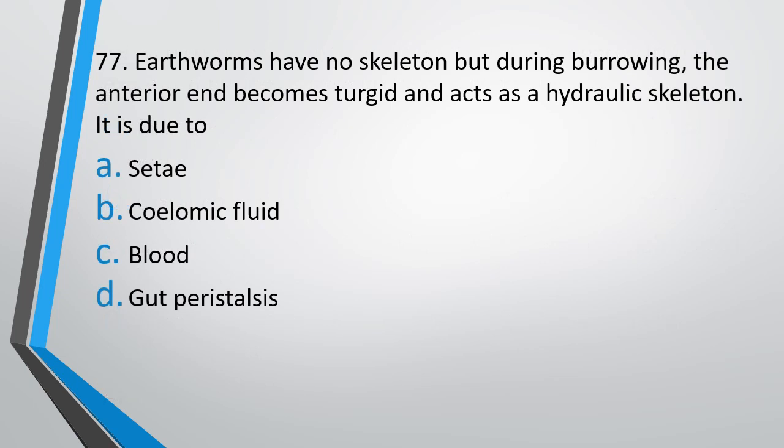Question number 77: Earthworm has no skeleton, but during burrowing the anterior end becomes turgid and acts as a hydraulic skeleton. It is due to — option A: setae, option B: coelomic fluid, option C: blood, or option D: gut peristalsis. The correct answer is option B, coelomic fluid.